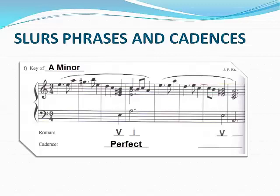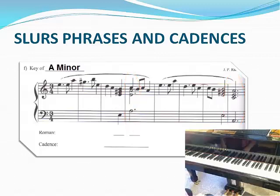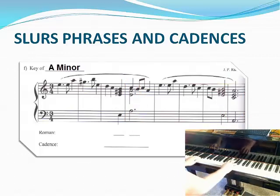The last cadence ends with an A minor chord, which is a I chord in A minor. The chord before that is an E major chord, which is a V chord in A minor. This cadence is also a perfect cadence. Notice how the A minor chords are written differently in each cadence — there's still root position chords, even though the voicing in the treble clef is different. Here's what the passage sounds like.